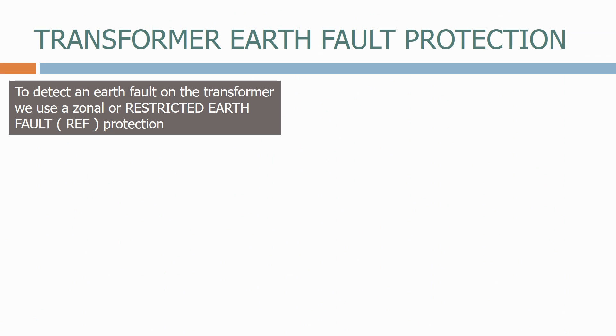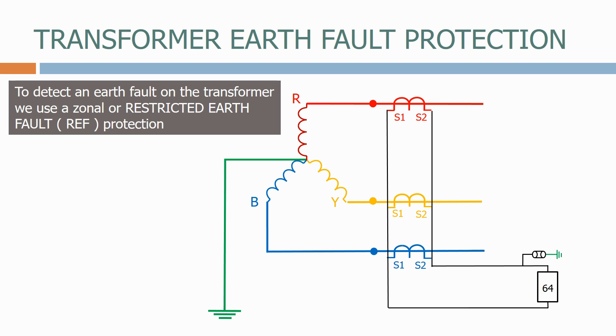To detect an earth fault on the transformer, we use a zonal, or restricted earth fault protection. To make it zonal, we connect the three phase CTs to a CT on the ground connection.